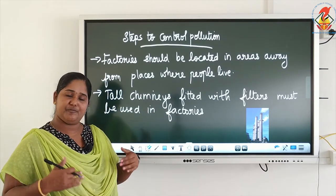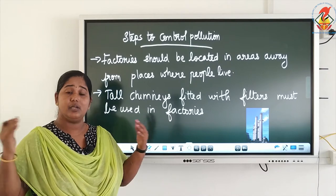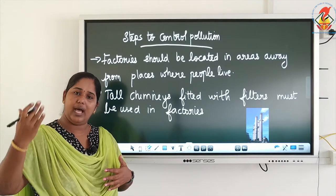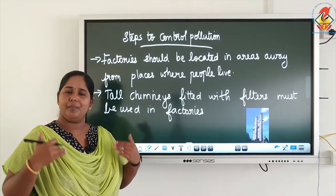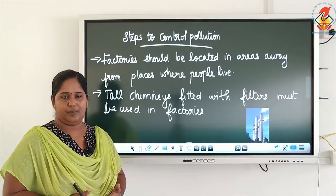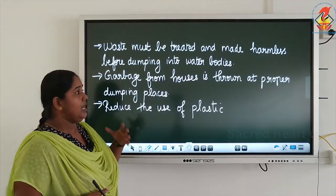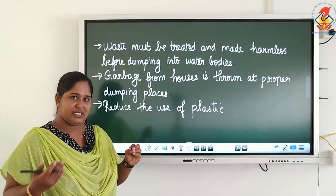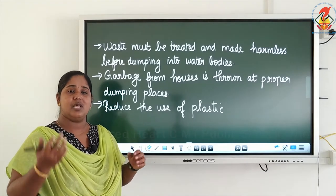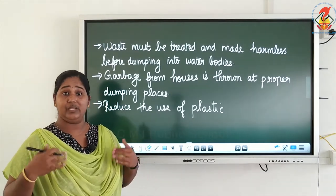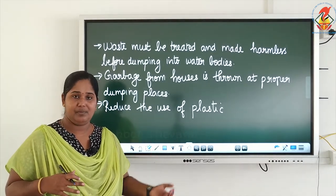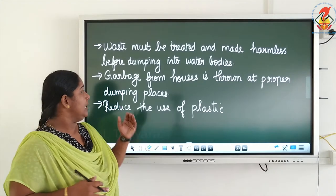Tall chimneys with filters must be fitted in factories so that the smoke goes high up in the air without suffocating people around. Even if it goes high up it affects us, but the effect is reduced as it is not directly affecting people nearby. Waste must be treated with chemicals to make it harmless so that it can be safely dumped without polluting water bodies.